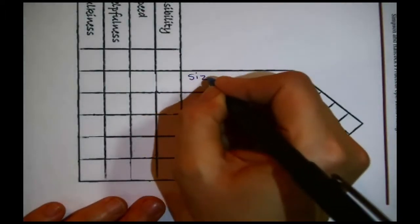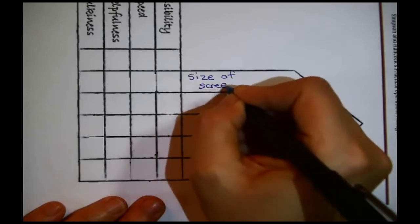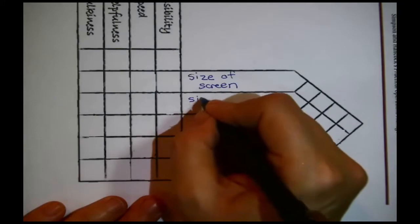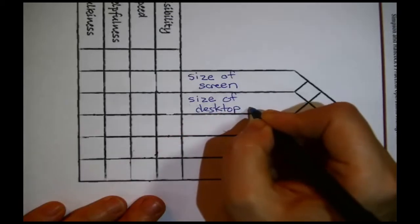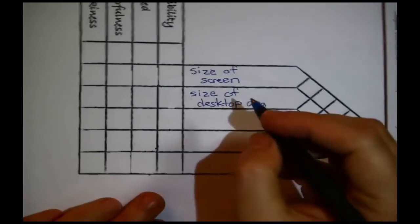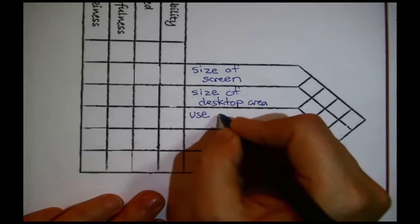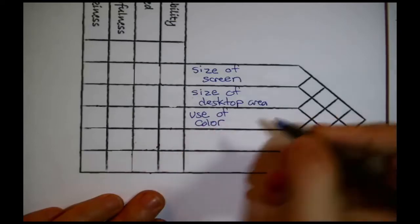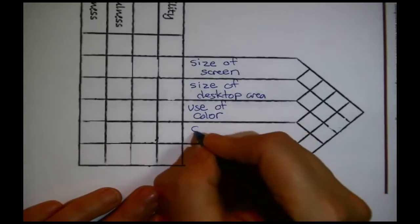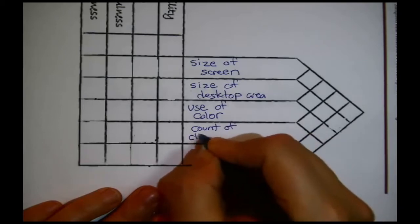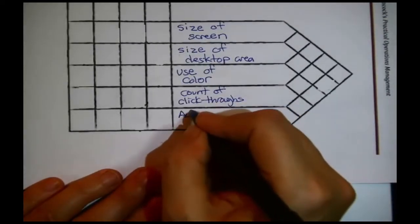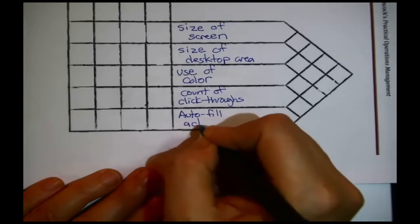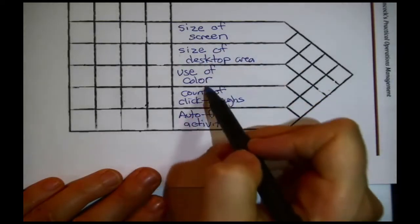What did they say? Let's see. I'm going to turn this for a moment so I can write fairly neatly. Size of screen was the first specification mentioned. Size of desktop, desktop area. That was the second specification. Let's see, use of color. That was the third. Click-throughs, count of click-throughs in the software. That was another technical specification. And auto-fill activity.